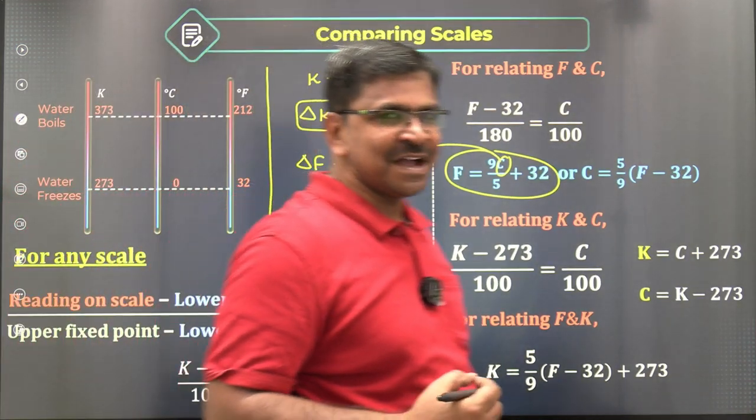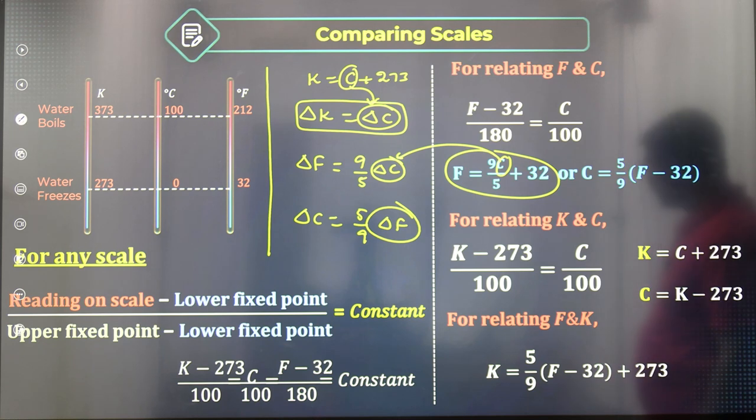Now let us focus on problem solving. In physics, problem solving is easier when you focus on approach and solving methodology, and you should be good at simplification. Formula memorization is not a serious problem — in physics, only certain key things need to be remembered, and the rest can be derived by logic. The key formula to remember is: (X minus X₀) / (X₁₀₀ minus X₀) equals a constant, the same in any scale.